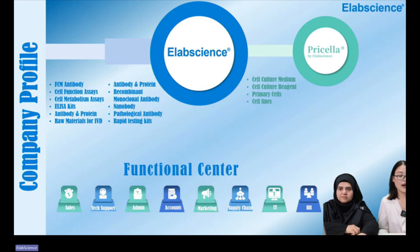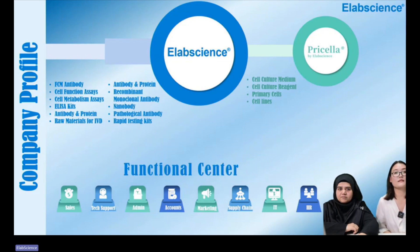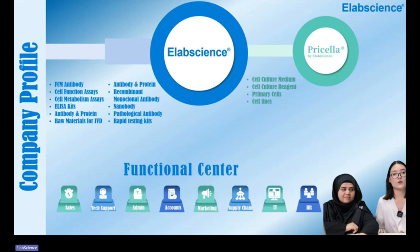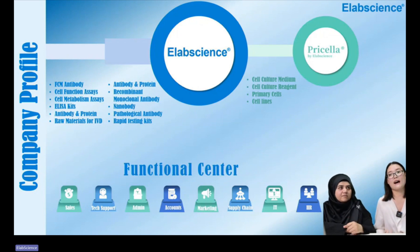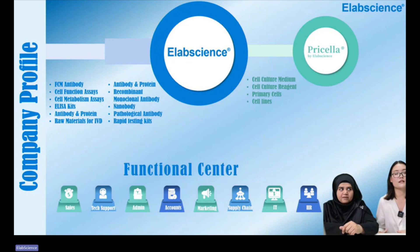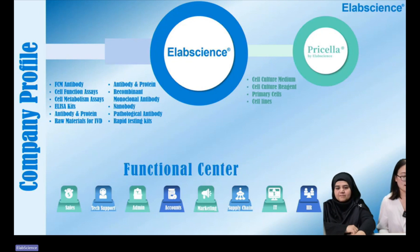We have an advanced antibody development platform, and we can provide over 15,000 primary and secondary antibodies, covering application fields of ELISA, flow cytometry, western blotting, IHC, IF, IP, and all common applications used in scientific research.